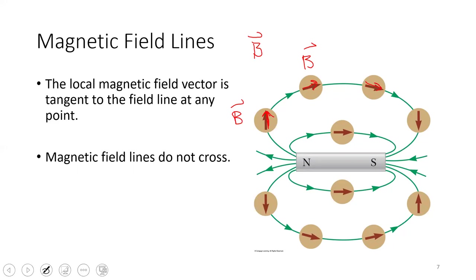Related to that, magnetic field lines do not cross. The reason they do not cross is that would give us nonsensical information. That would tell us, if we had a field line that crossed, that the field pointed in two different directions at the same point. That doesn't make sense. Just like electric field lines, magnetic field lines do not cross.